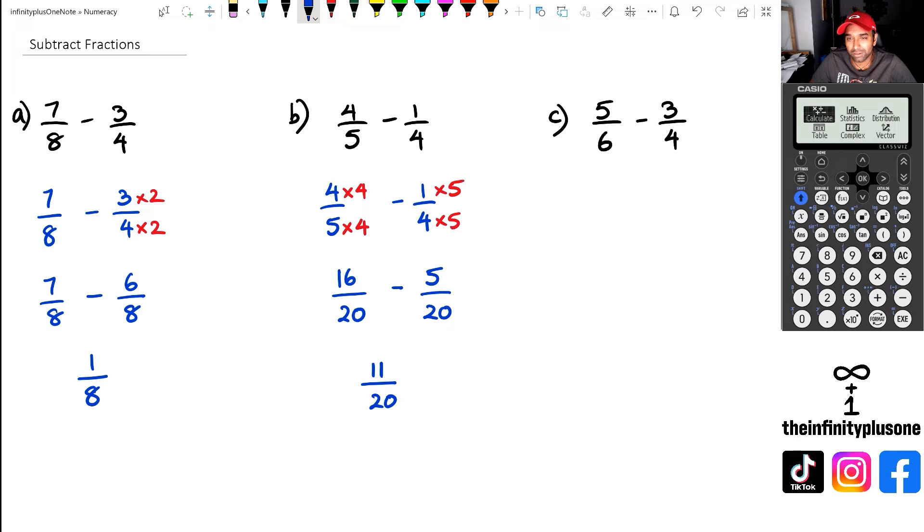Otherwise, drop it in the comment section and I will link it up here somewhere. But anyway, between 6 and 4, the lowest common multiple is 12. So we're going to take 5 over 6, and we're going to minus 3 quarters.